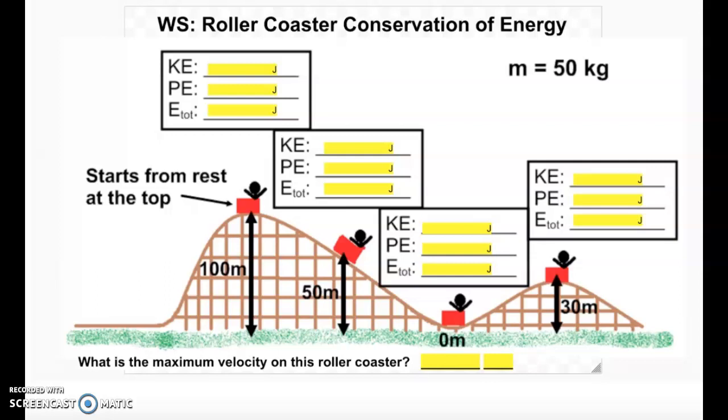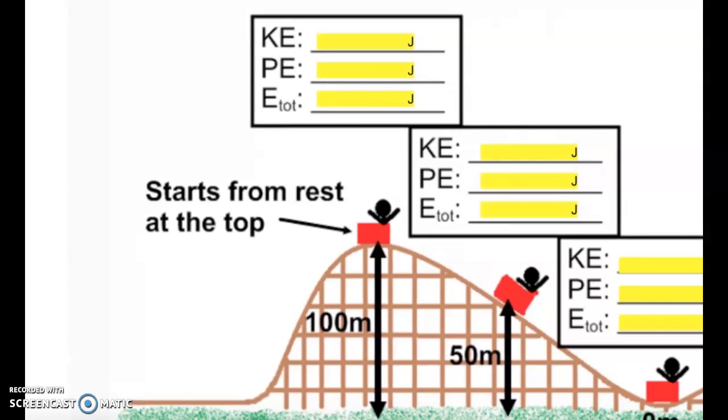This particular roller coaster looks like you start at the very top of that 100 meter hill, go all the way to the bottom, and then go over another smaller 30 meter hill. Our goal at each of these points is going to be to find the kinetic energy, the potential energy, and the total energy of our little rider. We're given the mass of that rider is 50 kilograms. Let's take a look. I want to start at our first hill, that 100 meters. We're asked to find the kinetic energy, the potential energy, and the total energy.